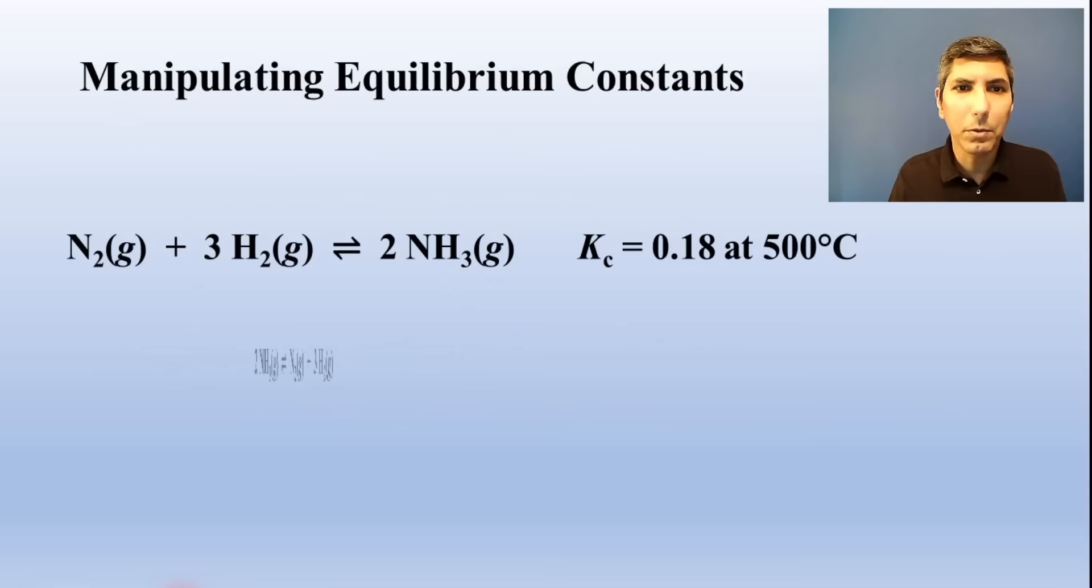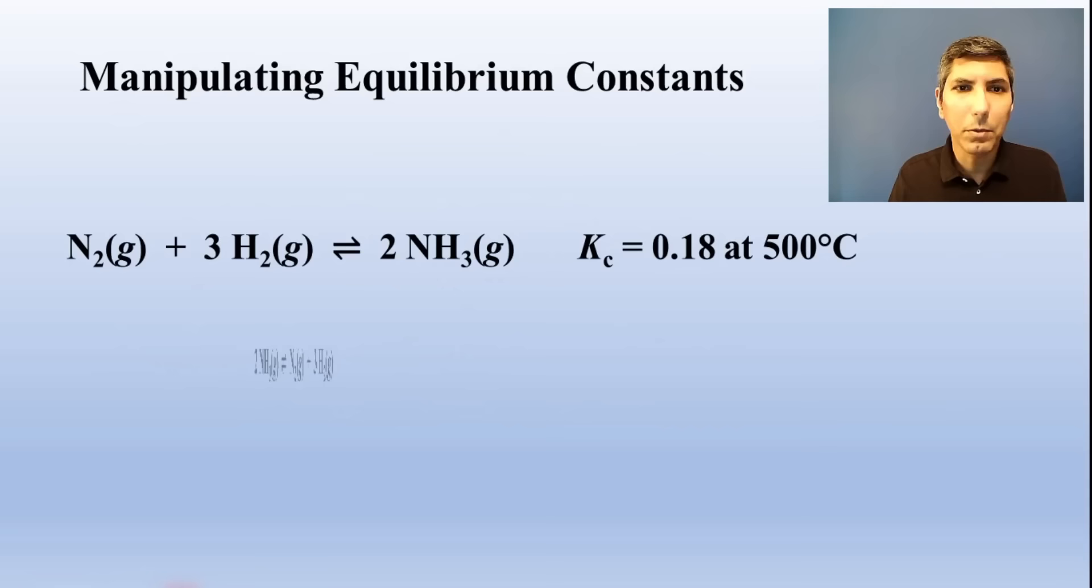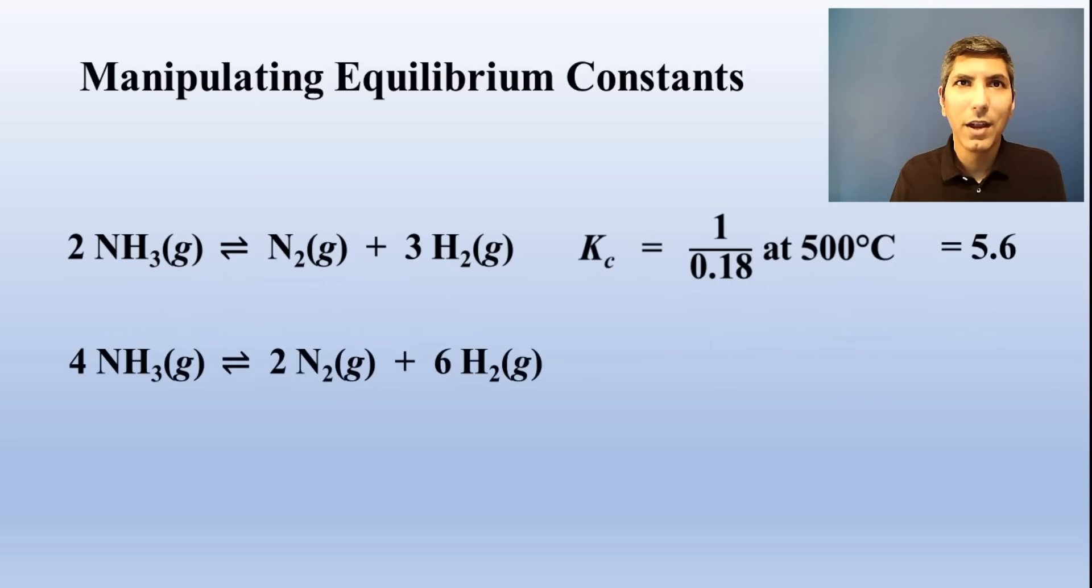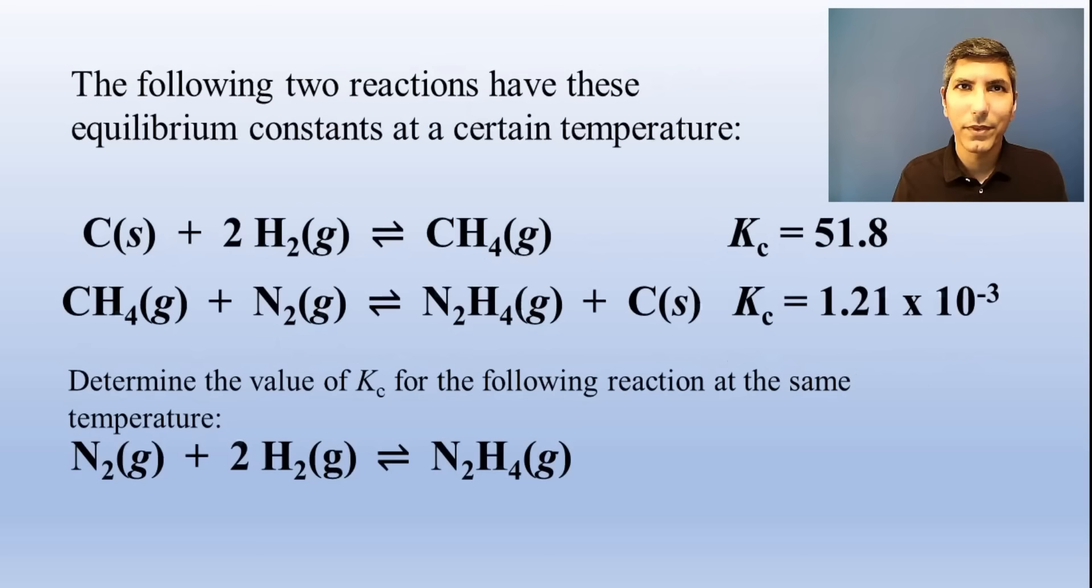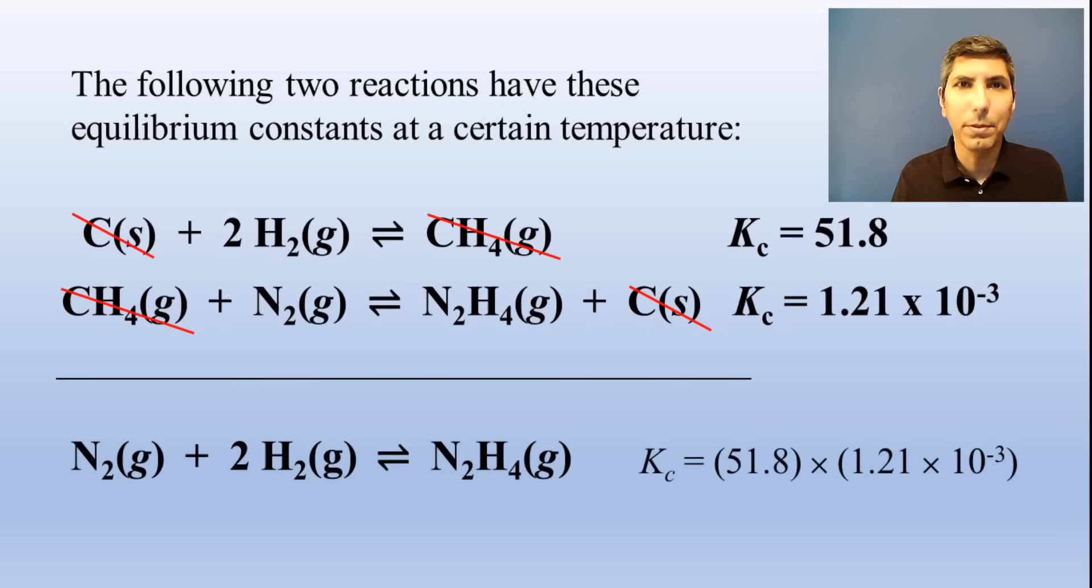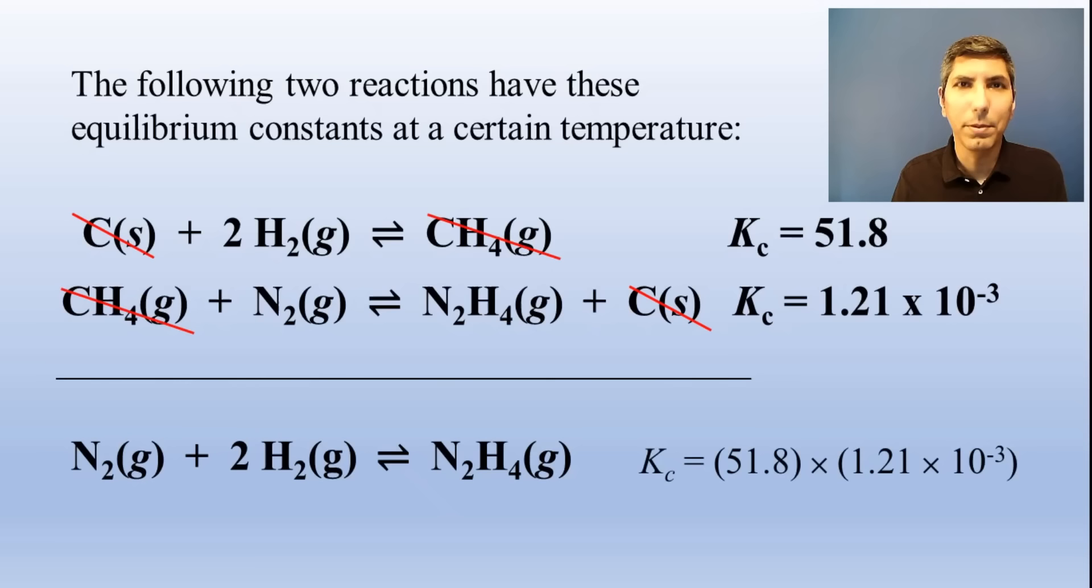When we manipulate a reaction, the equilibrium constant changes accordingly. When we flip a reaction around, the equilibrium constant becomes the reciprocal of what it was before. When we double all the coefficients in a reaction, the equilibrium constant becomes the square of what it was before. And if we add reactions together to create a new reaction, the two individual equilibrium constants are multiplied by each other to become the constant of the new reaction.